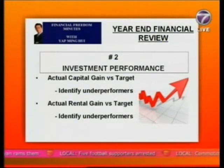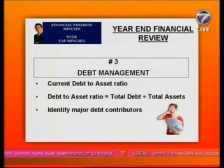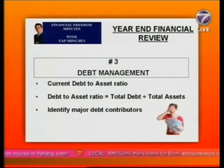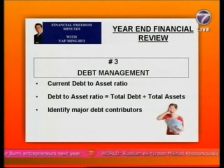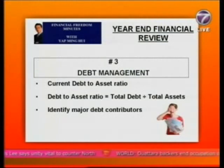The third checkpoint is about debt management. We're going to look at your current debt-to-asset ratio — total debt divided by total assets. If your debt-to-asset ratio is more than 70%, you have a major problem with too much debt. If it's only 30%, you're in a healthy condition. If it's too high, find out the major contributors — property loan, car loan, or credit card loans — and consider setting a goal to reduce debt exposure next year.